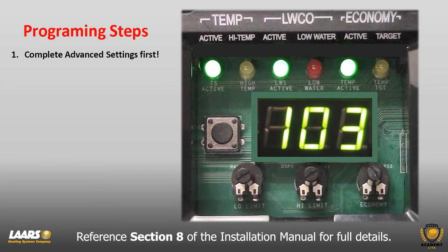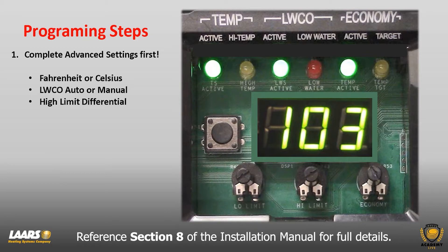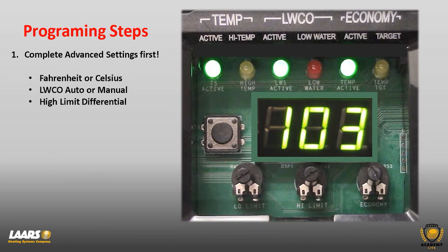Step one: complete the advanced settings first. Under advanced settings, you can change from Fahrenheit to Celsius, change your low water cutoff from auto reset to manual reset due to local codes, or change your high limit differential. The high limit on this boiler is an auto reset. Using the example of 200 degrees with a defaulted differential of 30 degrees, at 200 degrees the boiler shuts off but at 170 it would refire.